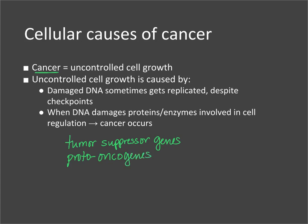If there is a mutation or problem with the replication of these genes — the DNA that codes for them — it damages the proteins involved in regulating cell division. When cell division regulation breaks down, we end up with cancer.